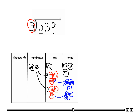We can make three groups of three again — one, two, three — and we have two left over. We cannot make another group of three. Now let's count all the groups in the ones place: one, two, three, four, five, six, seven, eight, nine. We have two left over, so we write nine with a remainder of two.